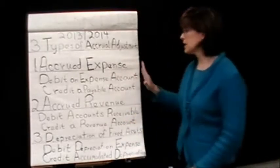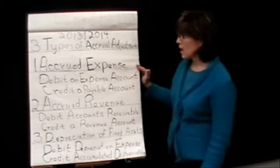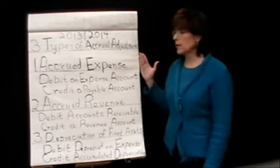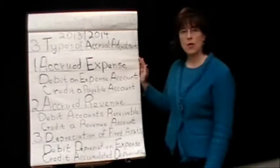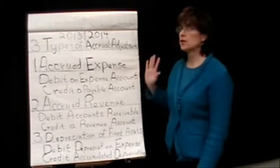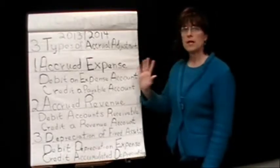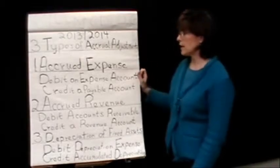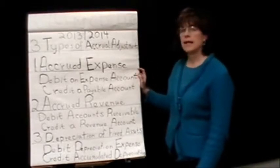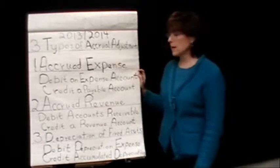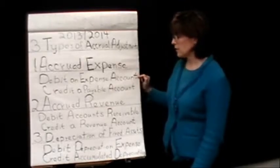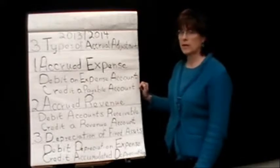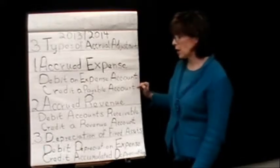Accrued expenses, as I mentioned earlier, are expenses that we have never paid. Maybe we find there's something we owe for that we haven't paid yet, but we consumed or used it up in the period we're trying to determine income for before we close our books. To record accrued expenses, we would debit an expense account — whatever it relates to — and credit a payable account, because we still owe for it.